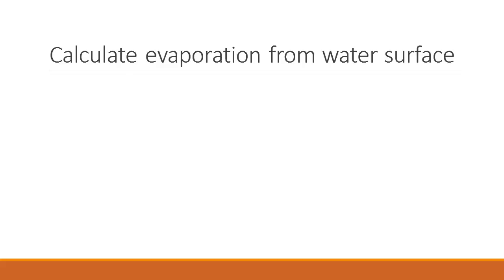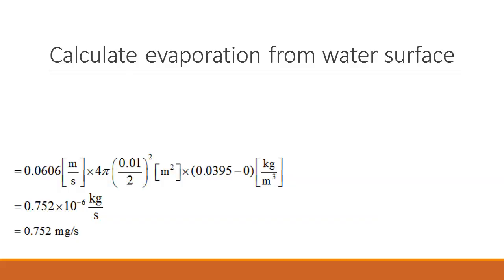So now we need to calculate evaporation, knowing the mass transfer coefficient. So the amount of evaporation from a drop is given by HM times the area of the sphere times concentration at the surface minus concentration at infinity. So HM, we just calculated, area is the surface area, 4 pi r squared.